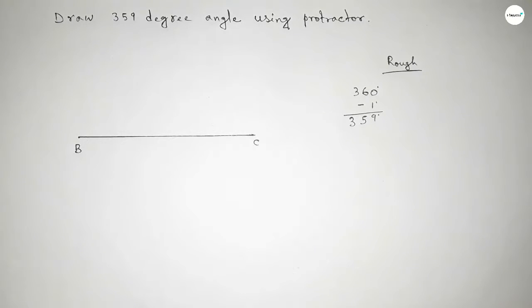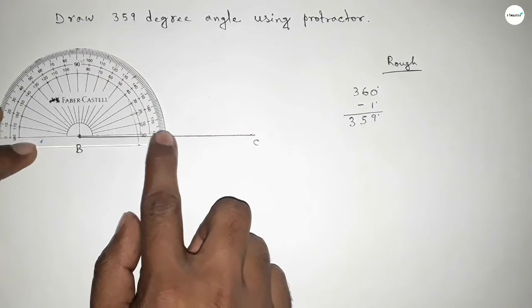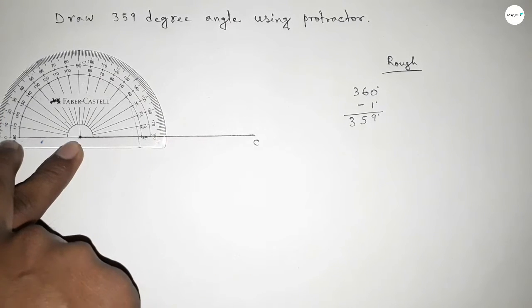First, constructing a 360-degree angle. So measuring 360 degrees - this is from here, total 180 degrees.